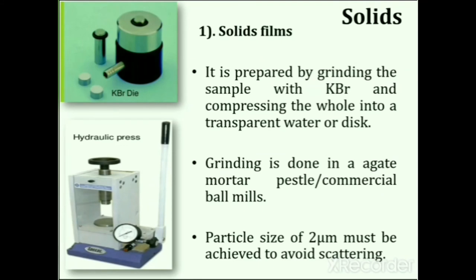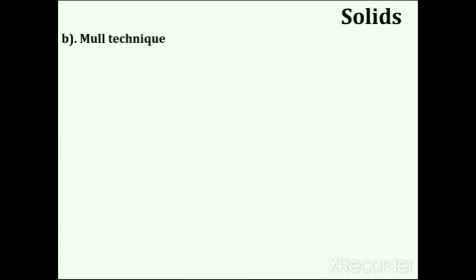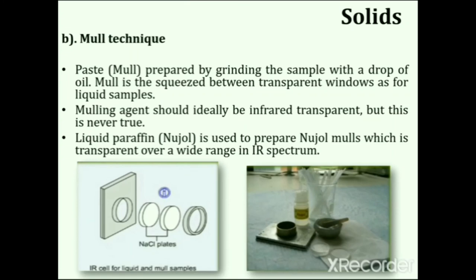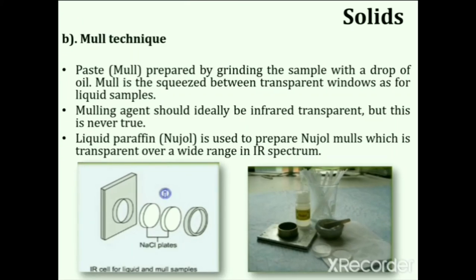Grinding is done in an agate mortar and pestle or commercial ball mills; poorly ground mixtures lead to discs that scatter light rather than transmit it. A particle size of 2 µm must be achieved to avoid scattering. Compression to form a cohesive disc requires high hydraulic pressure. Solid samples can also be handled by the mull technique: a mull is prepared by grinding the sample with a drop of oil, then squeezed between IR transparent windows. The mulling agent should ideally be infrared transparent. Usually liquid paraffin (also known as Nujol) is used, which is transparent over a wide range of the IR spectrum.